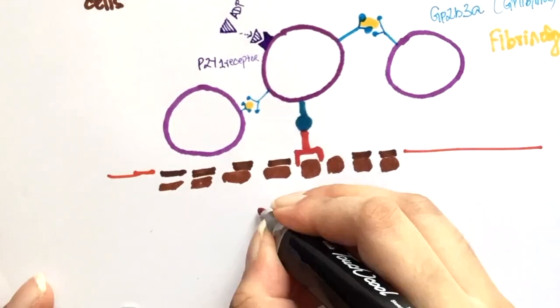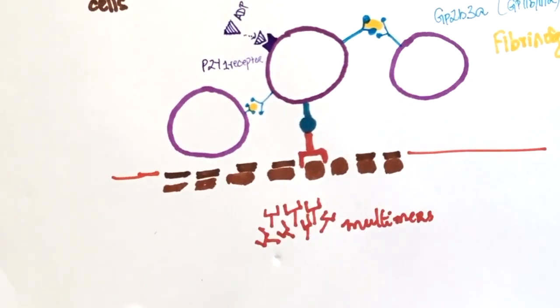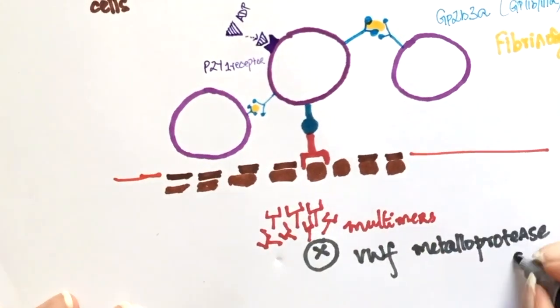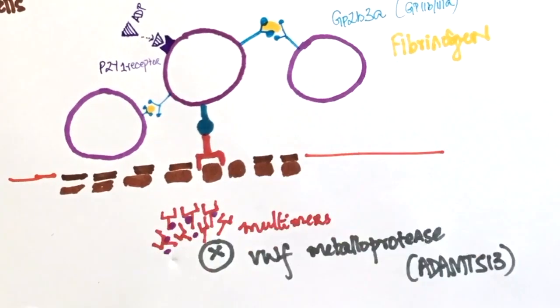Von Willebrand factor can bind to each other and potentially form multimers. This can lead to an increase in platelet adhesion and thrombus formation. The formation of these multimers is prevented by von Willebrand factor metalloprotease. This is also known as ADAMTS13. A deficiency in this leads to microthrombi formation and a decrease in platelet levels.